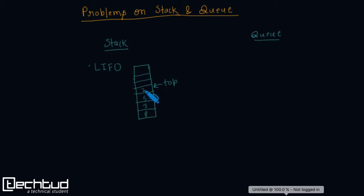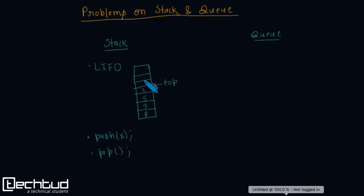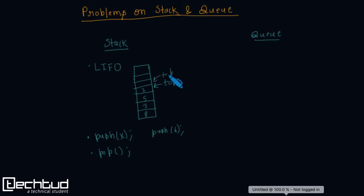The stack supports two functions: push(x), which pushes a data item into the stack, and pop, which deletes the topmost element. You create an array, keep calling push to add elements, and call pop to delete. Suppose we want to insert 6 into the stack — we call push(6), the top pointer moves to the new position, and 6 is inserted at the top.